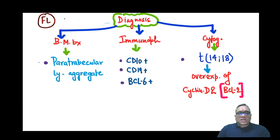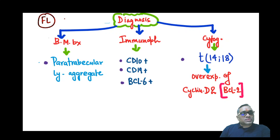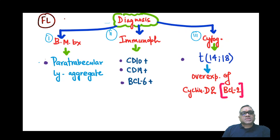For the diagnosis of follicular lymphoma, we use three things: bone marrow biopsy, immunophenotyping, and cytogenetics. On bone marrow biopsy, the characteristic important finding is paratrabicular lymphoid aggregates — tumor cells aggregating around the bony trabeculae.